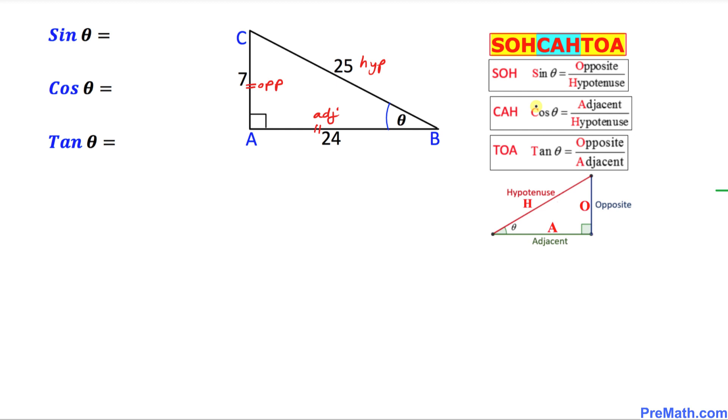So let's go ahead and use this SOHCAHTOA chart to figure out these values. Sine is always equal to opposite over hypotenuse. In our case, opposite is 7 divided by hypotenuse is 25. That is your answer.